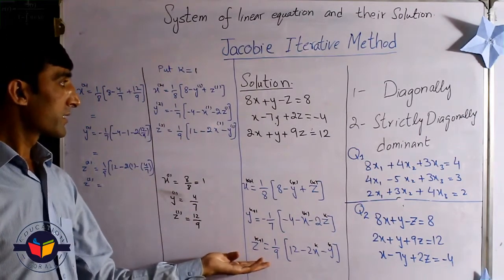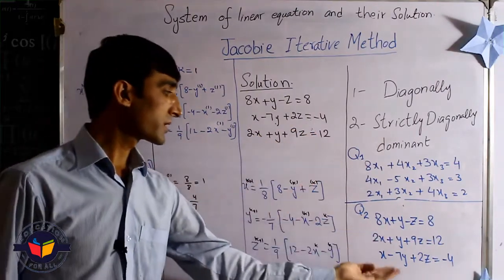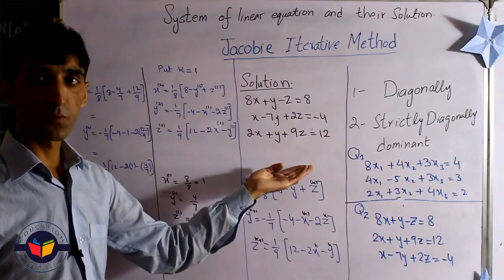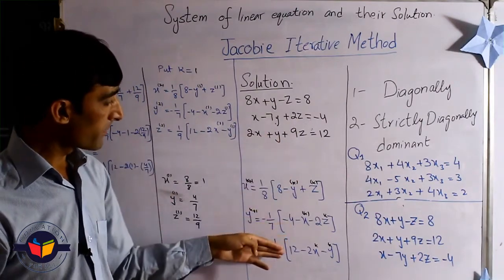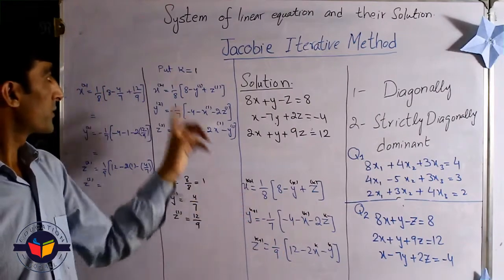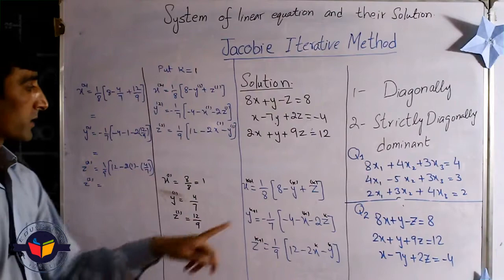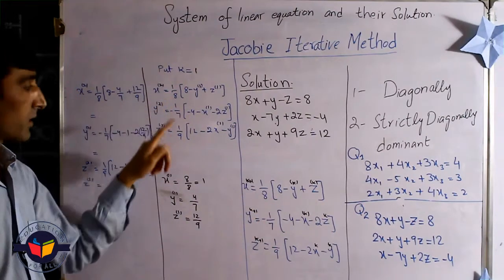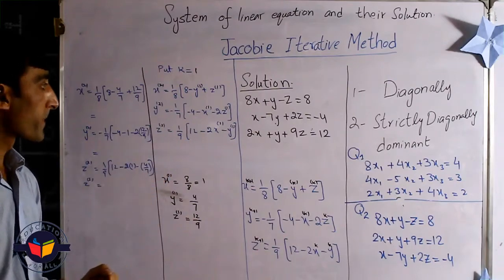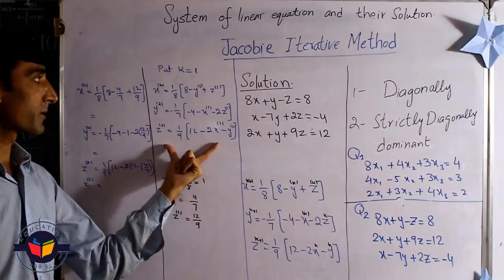Now after that, the given question, first of all we arrange this question in this form, and then we replace this in this form. Now we put k equal to 1. When we put k equal to 1, the given question is reduced to this form. In this form, we need some values to solve this problem.